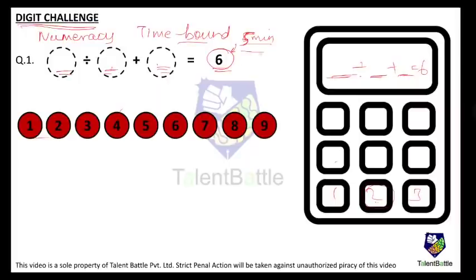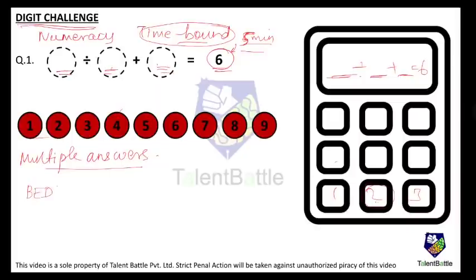A few things to remember: it is time-bound, and there are multiple answers to each question — multiple ways to reach the answer. More important is reaching it quickly and accurately. Also remember the rule of BEDMAS: Brackets first, then Exponents, then Division, then Multiplication, then Addition, then Subtraction. When filling in digits you must follow BEDMAS, and I'll show how this example has two different valid answers.